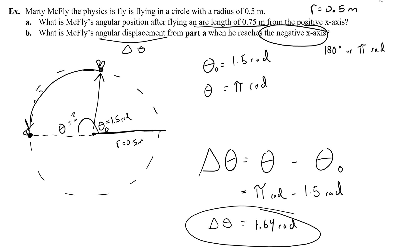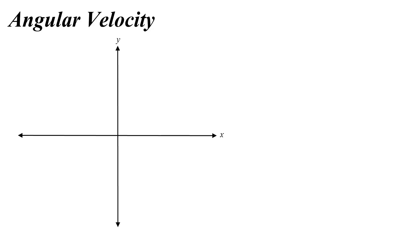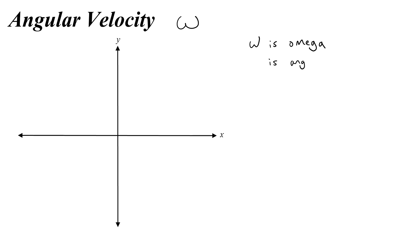Now let's talk about angular velocity. Angular velocity is something where we use the Greek letter omega. You're used to seeing omega like the capital omega, but for angular velocity we use the lowercase omega, which looks kind of like a weird w. So omega is angular velocity.